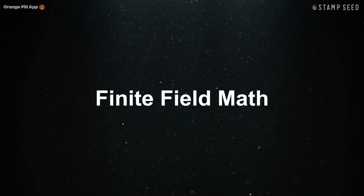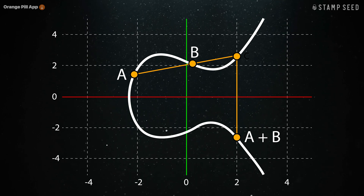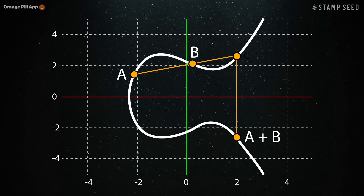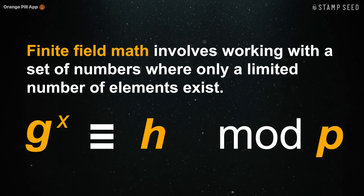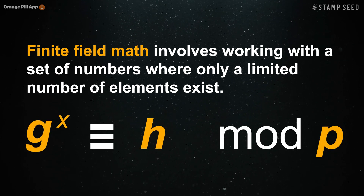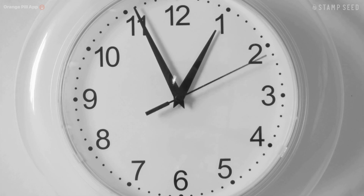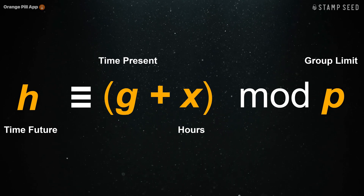This problem arises when you apply finite field math to elliptic curves. Finite field math uses operations such as addition, subtraction, multiplication, and division in a way different from normal math. It is different in that it works more like a clock, with the maximum being 12 hours. If you exceed this amount, you start again at 1.